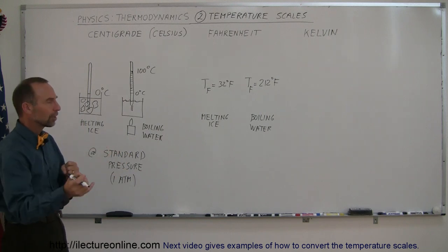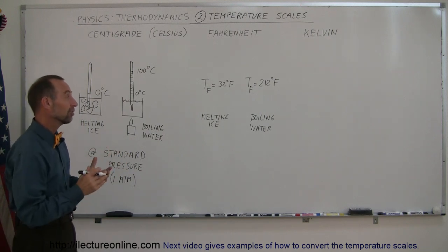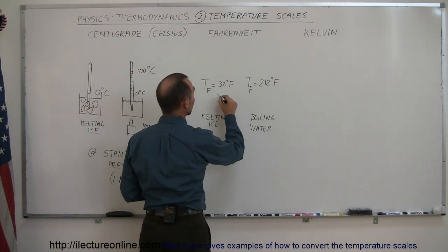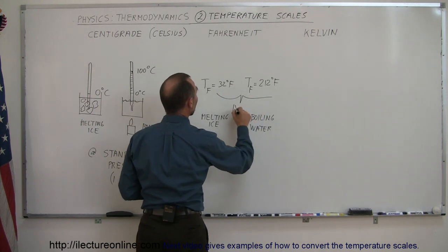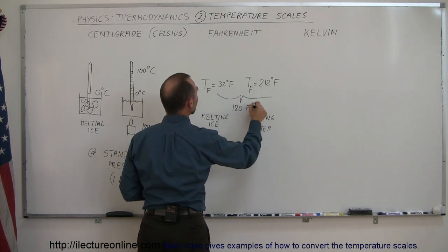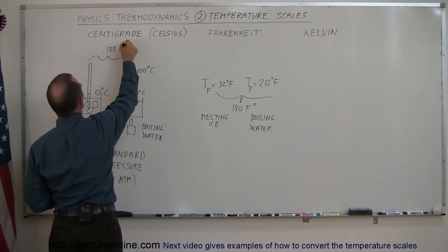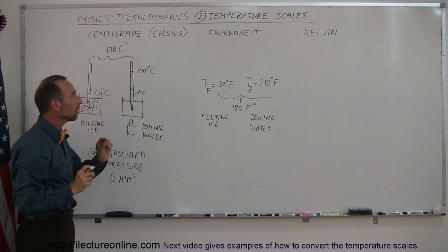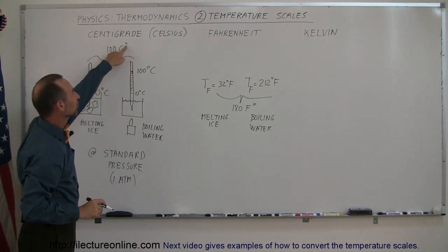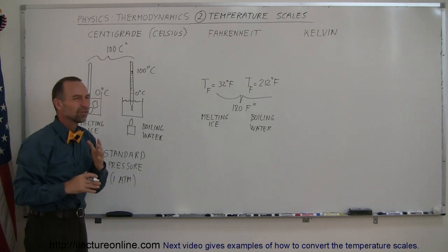And in a later video I will show you how to convert from one to the other. You just have to notice that if you take the difference between those, that is 180 Fahrenheit degrees, and if you take the difference between those two, that is 100 centigrade degrees. Now, notice where I put the little symbol for degrees. Here I put it behind, there I put it in front, so what's the difference?